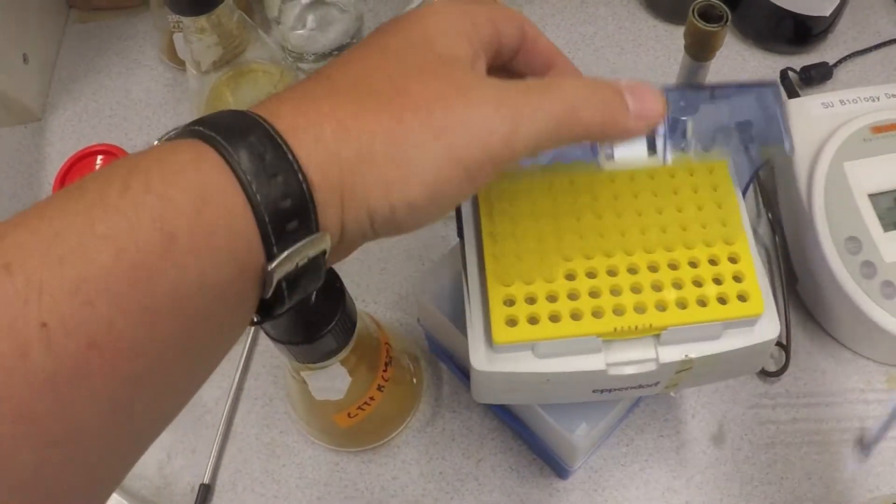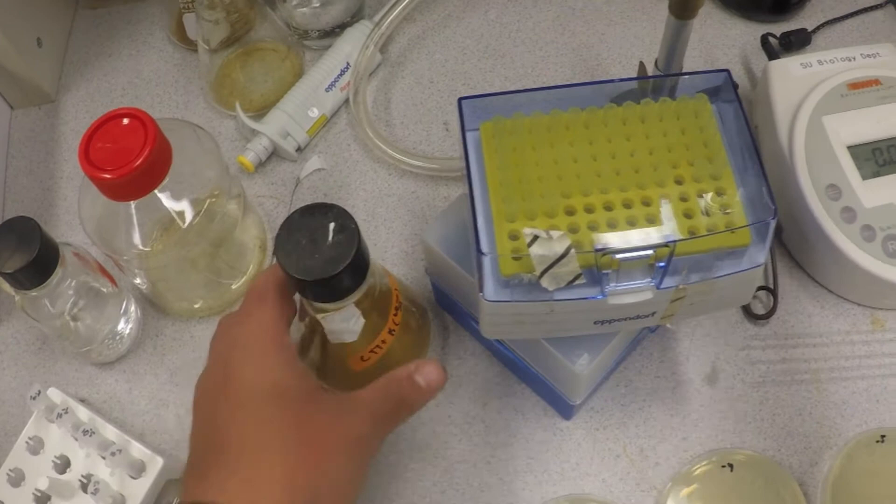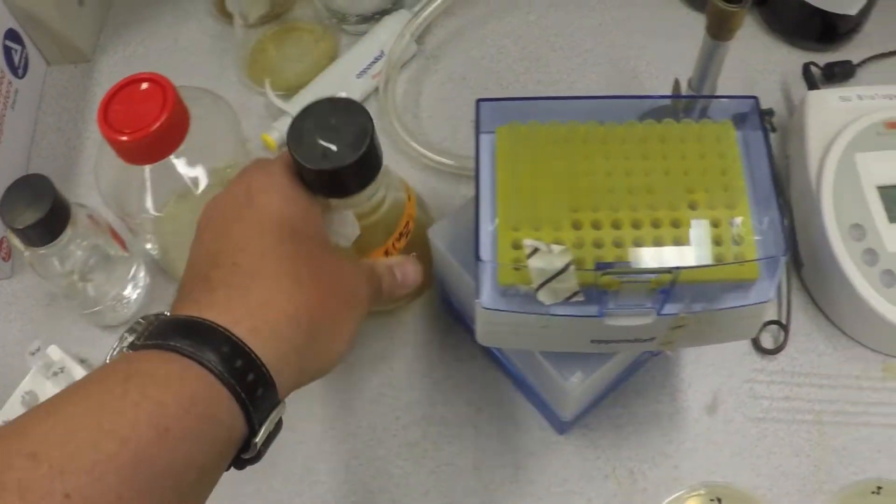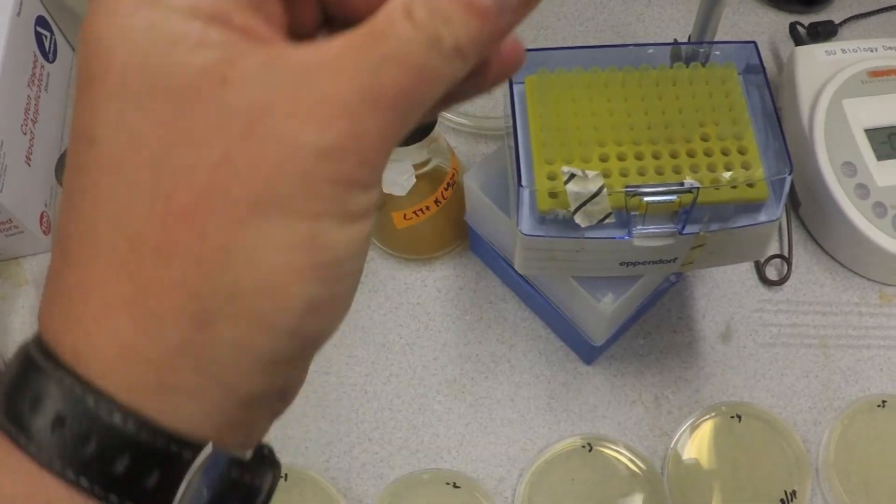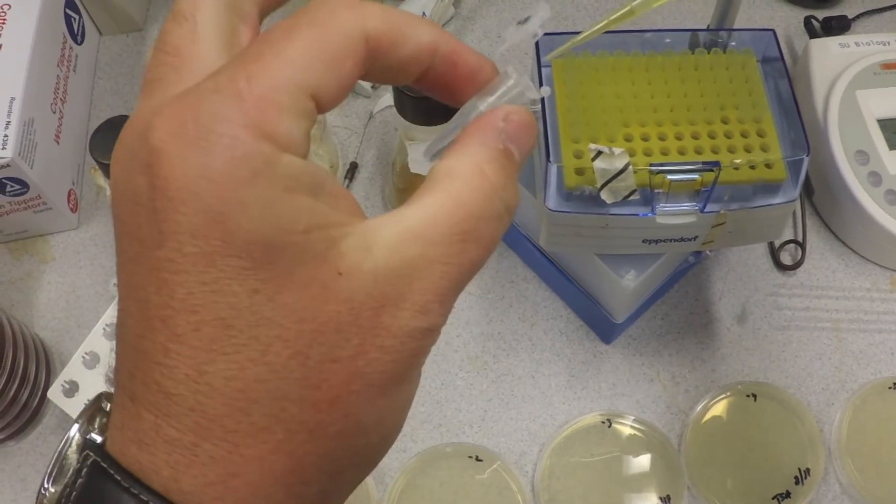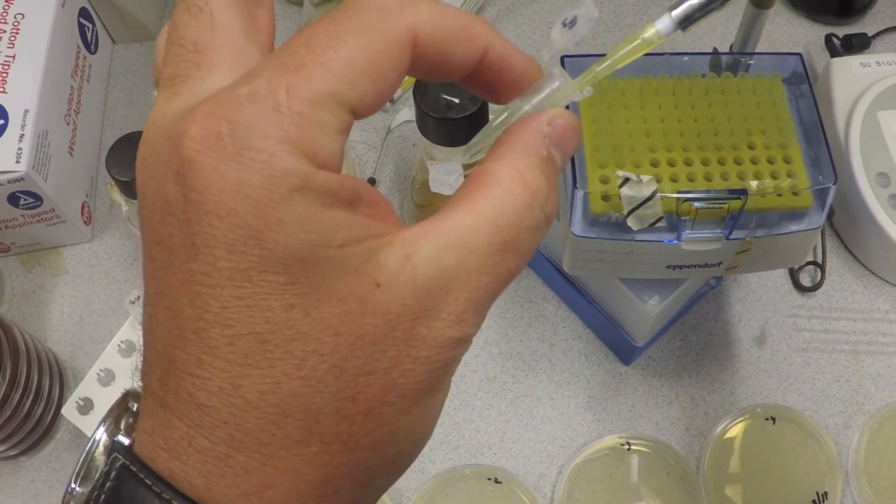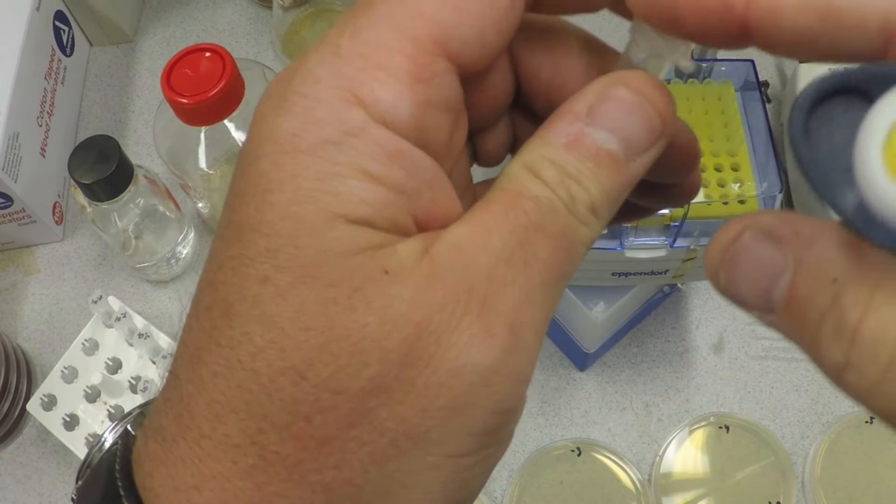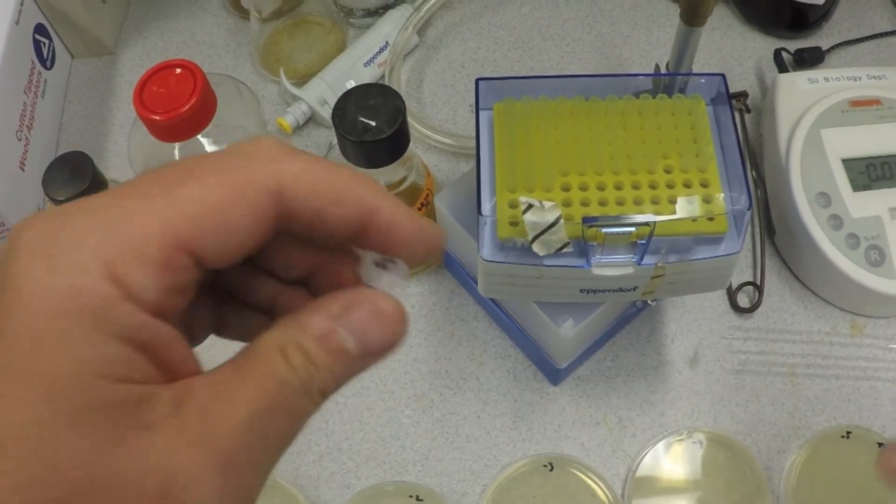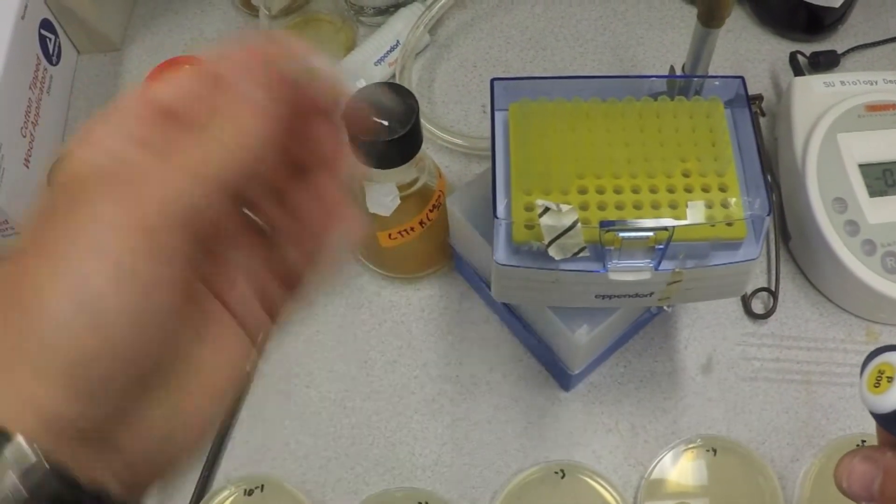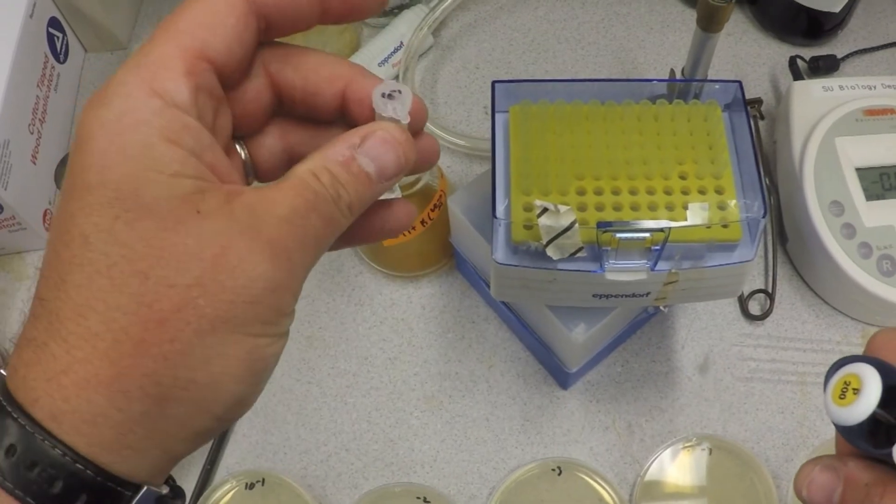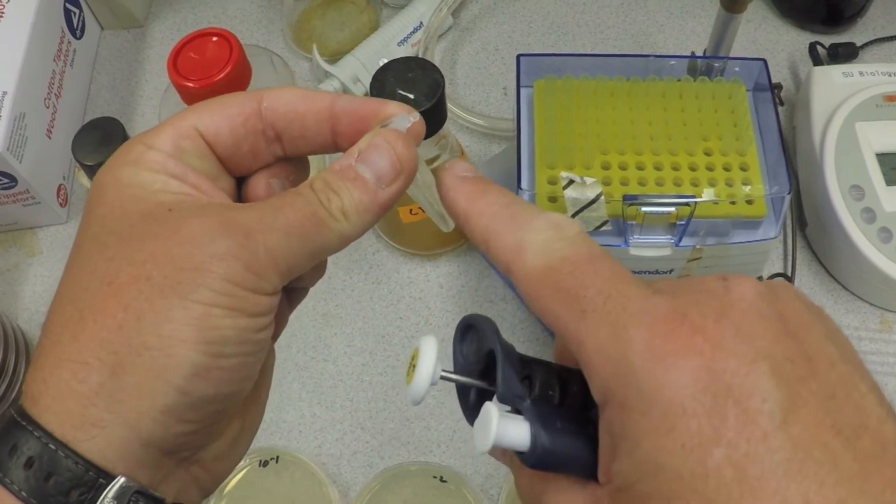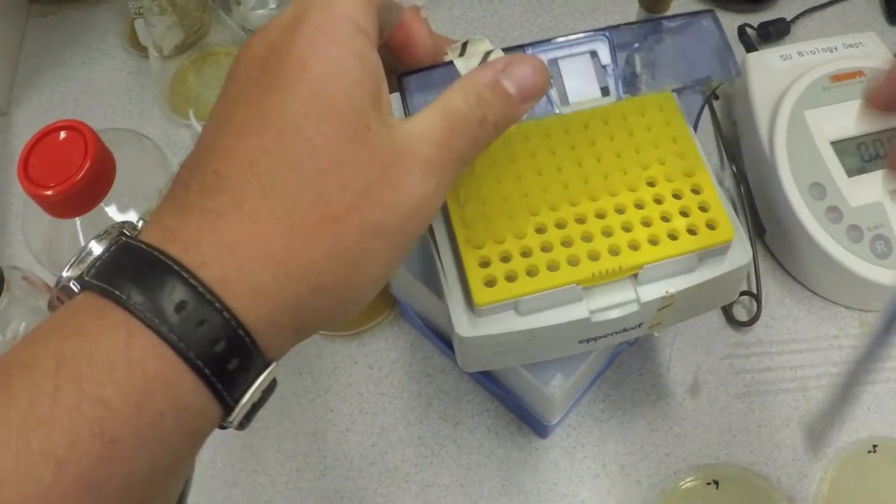So we go ahead and we take our sample and we put it in to our 1 to 10 tube, and we pipette up and down, get rid of the excess, put your tip into a biohazard bag, shake that up two or three times. Now this is a mix, this is a 1 to 10 dilution. Now I want to make a serial dilution of that, so we take another tip.